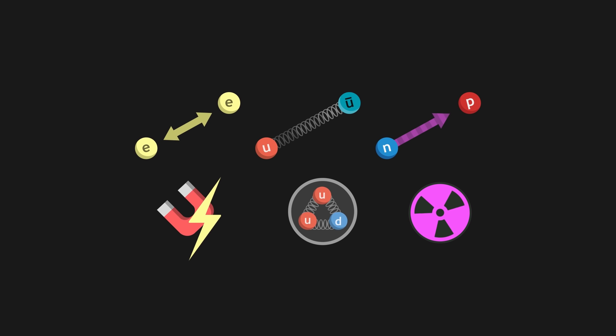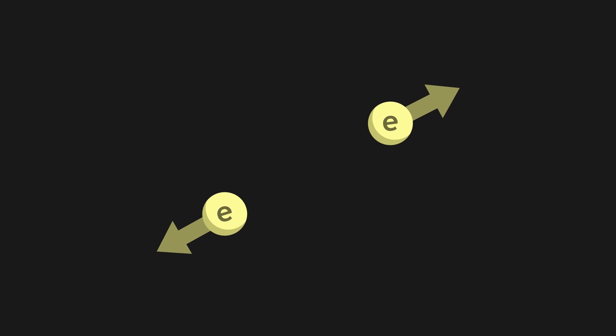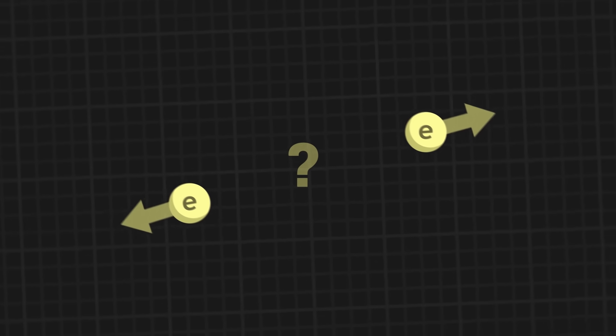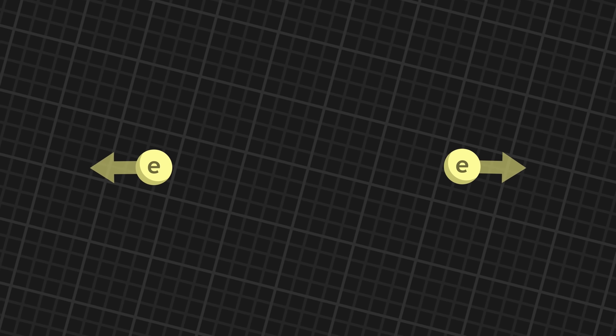Yet one last problem remains. Although we have successfully identified the three fundamental forces in the universe, they still seem to act at a distance. When we approach two electrons, for example, they repel each other at a distance, as if the electrons could communicate without coming into contact. Again, this situation seems absurd. How could two electrons interact, when they are separated by some distance?